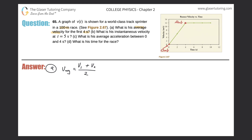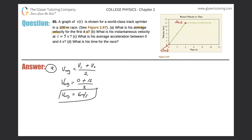Now we have all the information we need. The average velocity equals 0 plus 12, all divided by 2. So the average velocity is equal to 6 meters per second. Easy peasy.